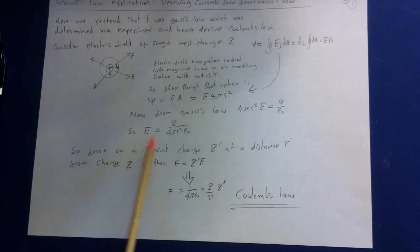So force on a point charge q' at distance r from charge q is force times q', right? So now we can work out Coulomb's law. Remember, E equals force over charge, so force equals charge times the field. If we write this down as a force now, multiply through by q', and there we have